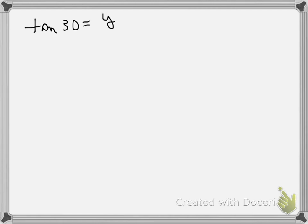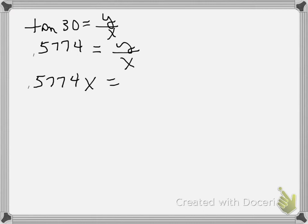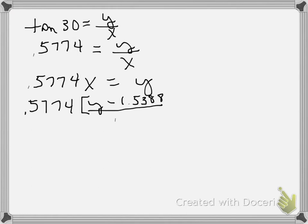The tangent of 30 is y over x, and tangent of 30 is 0.5774, so 0.5774 equals y over x. Multiplying both sides by x gives 0.5774x equals y. Now we do the substitution: 0.5774 times x, where x is y minus 1.5388 divided by 0.4663.